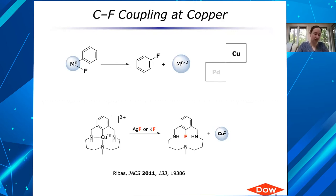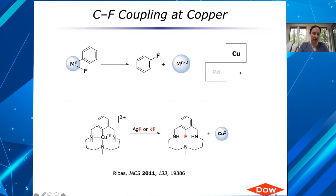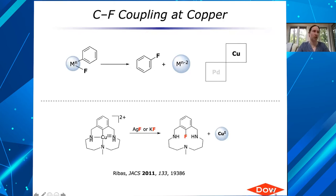The other challenge is that depending on your application, these electrophilic fluorinating reagents tend to be quite costly and much more corrosive and dangerous than fluoride sources typically. In the context of the work we do with Dow, they're not interested in electrophilic mechanisms because of the cost and the corrosiveness they don't want to deal with.